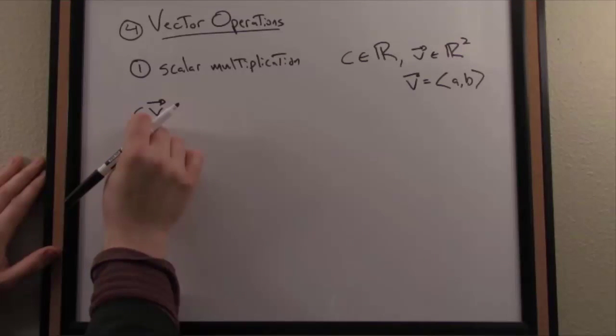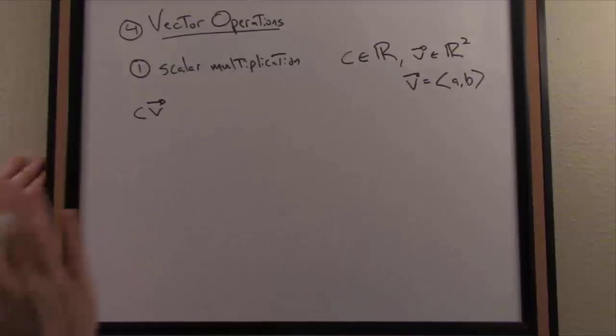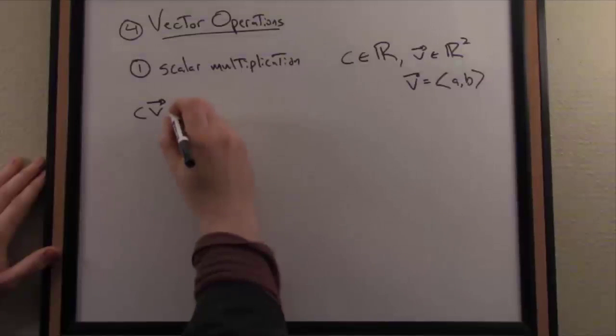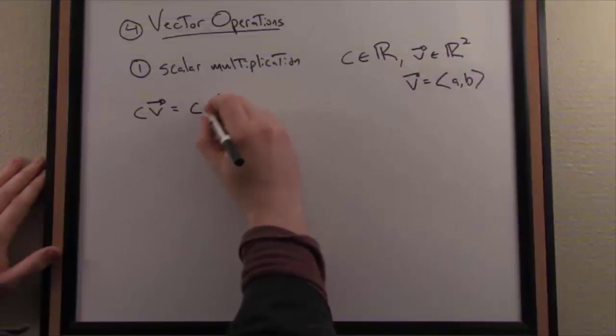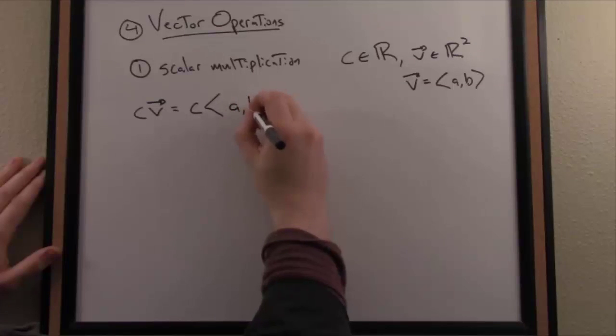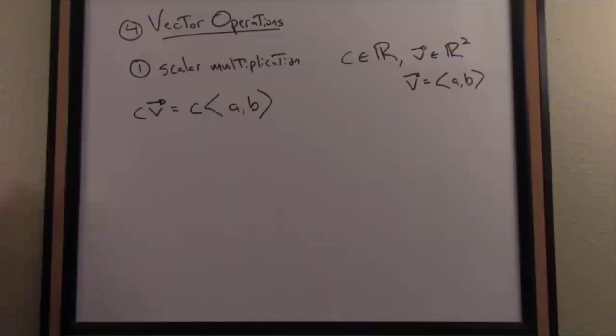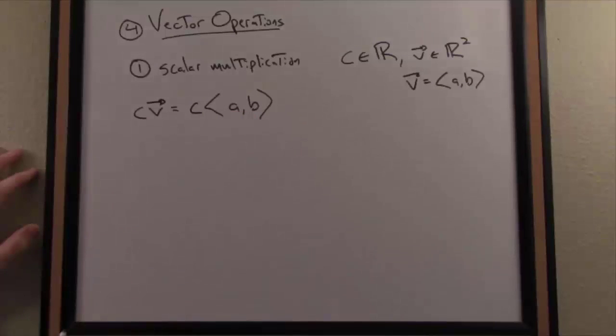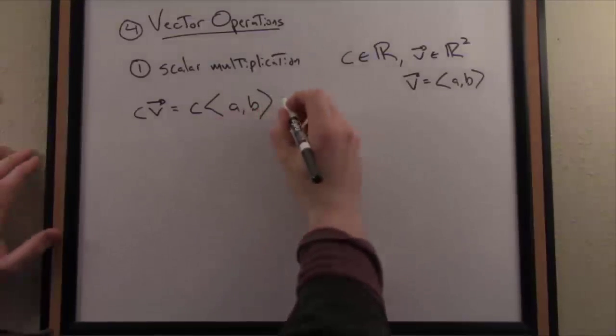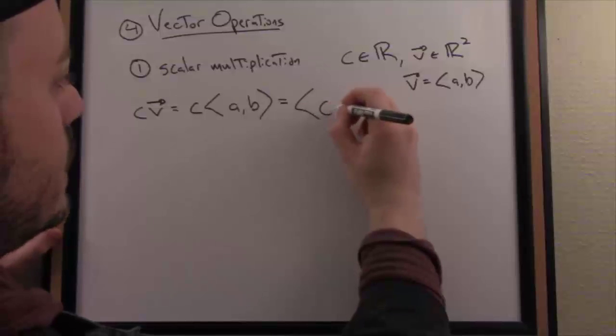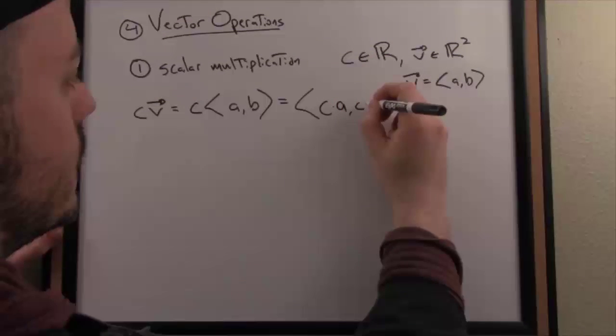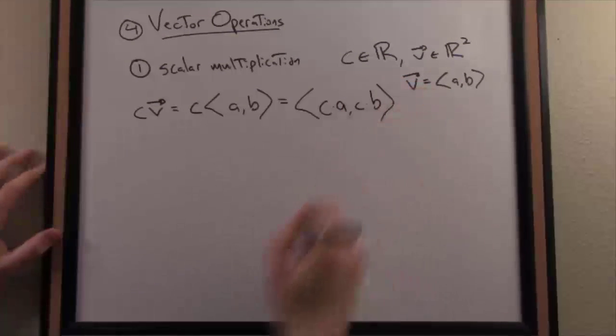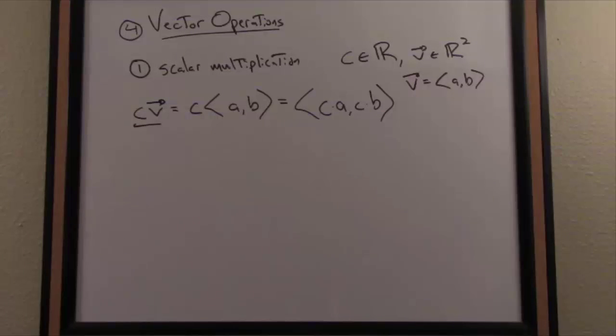So we denote scalar multiplication by adjacency here. In other words, write the scalar next to the vector. I don't put a dot or any multiplication symbol between it, typically. And let's expand this notation. So that's saying C multiplied by the vector described component-wise as A comma B. Well, the definition, the algebraic definition of scalar multiplication says you just distribute the scalar across each component of the vector. So in other words, I'd have C times A comma C times B. There is the algebraic definition of scalar multiplication.